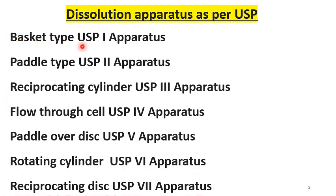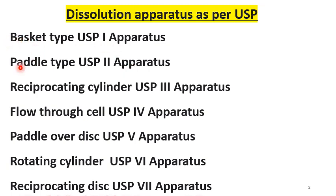Don't get confused between the reciprocating cylinder and reciprocating disk — reciprocating cylinder is USP 3 and reciprocating disk is USP 7. This basket type apparatus, USP 1, is also called rotating basket. Don't confuse rotating basket with rotating cylinder. Mainly for oral solids, apparatus up to type 4 are used — basket, paddle, reciprocating cylinder and flow-through cell. Out of these, paddle is the most widely used apparatus for oral solids.